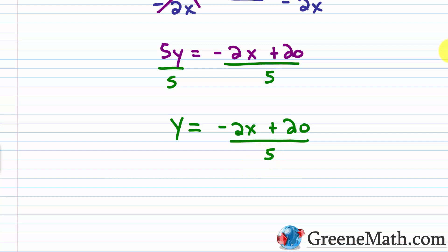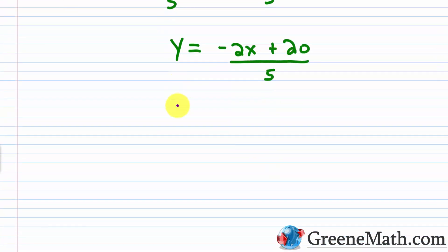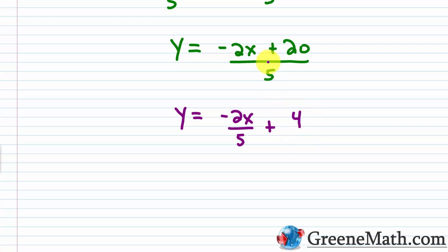You could also write that as y equals negative 2x over 5 plus 20 over 5, and 20 over 5 is just 4. Both answers are acceptable. When you get more than one unique variable involved, you're not going to have a variable equals some number — you're going to have a variable equals some expression.